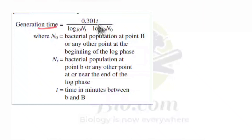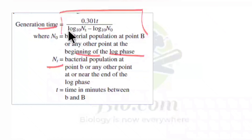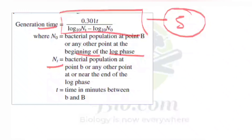One more formula based on the previous generation time formula: the generation time g = 0.301 × t / (log Nt − log N₀), where 0.301 is the value of log 2, Nt is the number of bacterial cells after time t, N₀ is the initial bacterial population at the beginning of the log phase, and t is the time in minutes. All these five formulas are very important for the generation time concept — they are asked both as formula identification and as numerical problems.